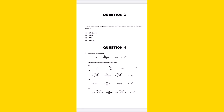Question three asks which compound will be the best nucleophile for an SN2 reaction. You should know that SN2 prefers strong nucleophiles, and strong nucleophiles are typically those bearing a negative charge. Without wasting time, we check which option has a negative charge — that is option three, which is our answer.